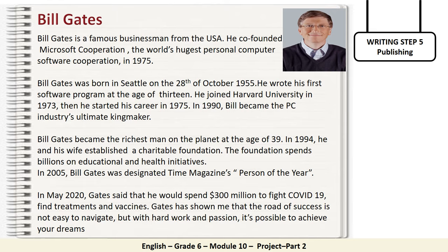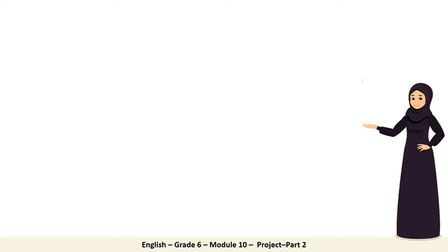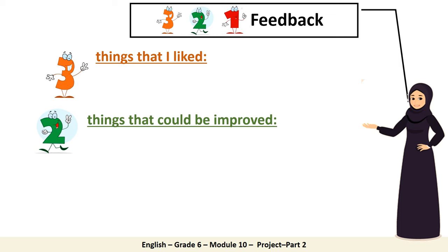Back again, let's check your biography. What a nice piece of writing! Having published your biography, it's time to give you some feedback about your writing. To do this, I'll be using the 3-2-1 strategy. In the 3 section, I will tell you three things I liked about your writing. In the 2 section, I will tell you two things that could be improved. In the 1 section, I will give you one suggestion.